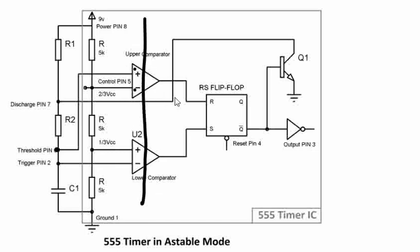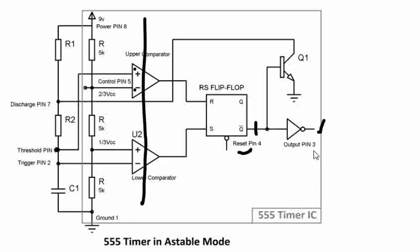That is one section in this 555 timer. In the second section we have something called a flip-flop — an RS flip-flop, set-reset flip-flop — which generates either 0 or 1 as output. We can reset this flip-flop anytime using the reset pin. The third section is called the amplifier section, or you can also call it a buffer section, from which you get the output.